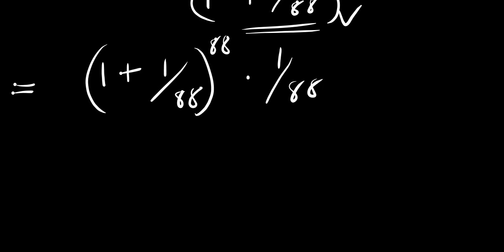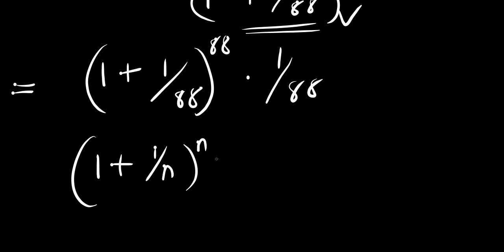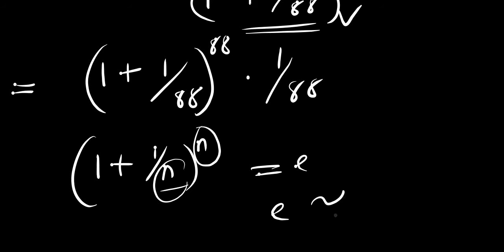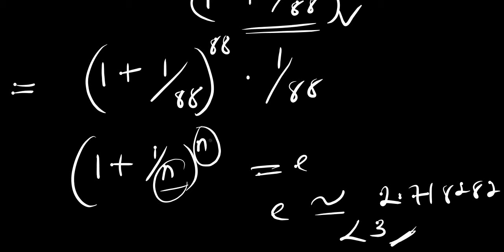We now apply Euler's formula: (1 + 1/n) raised to the power of n approaches e — Euler's constant — irrespective of how big n is. This gives an approximate value of 2.718282, which is a number less than 3. So this term alone gives us a number less than 3.